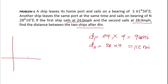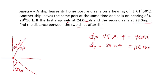The first ship sails south 61 degrees 50 minutes east — a distance of 96.0 miles. The second ship sails north 28 degrees 10 minutes east — a distance of 112 miles. Note that 61 degrees 50 minutes plus 28 degrees 10 minutes equals exactly 90 degrees, so the angle between the two paths is a right angle.